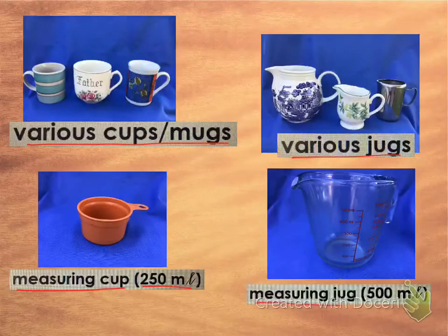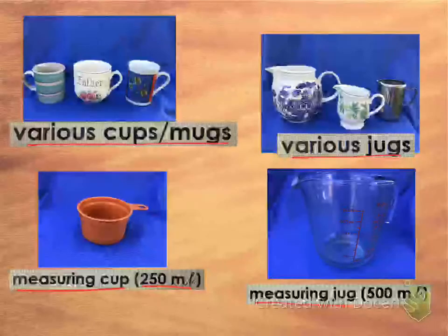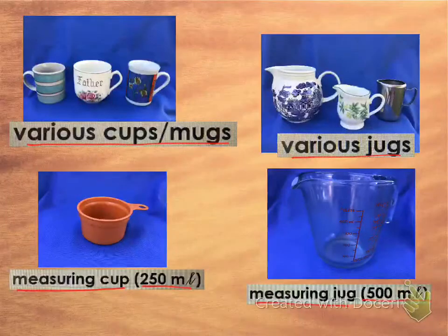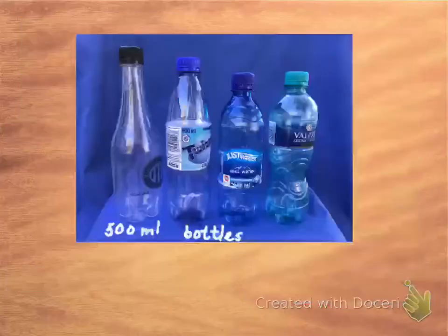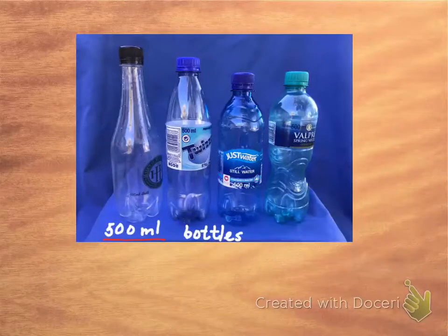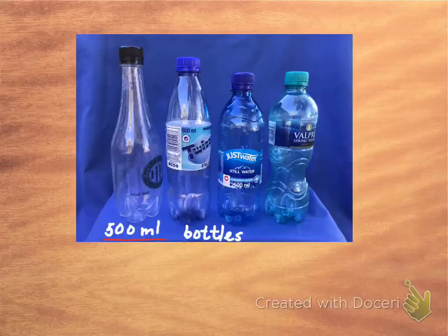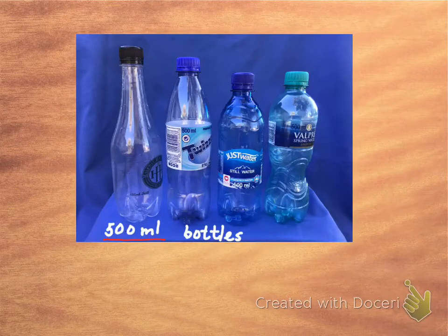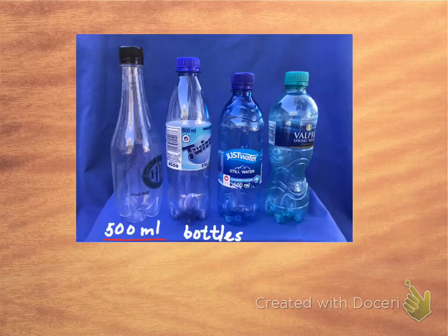Here we have a measuring jug, and that has got a capacity of 500 milliliters, so half a liter we can measure in that jug. Now, in these bottles, in each of them we could have 500 milliliters because the capacity of the bottles is 500 milliliters, even though the shapes are different.